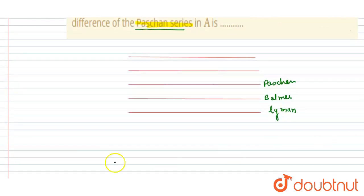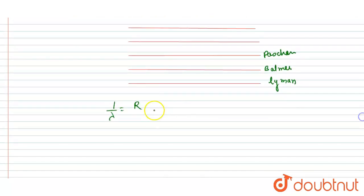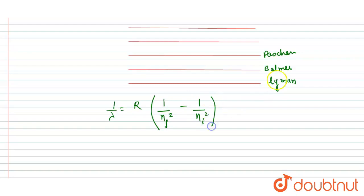If I write the formula for wavelength: 1/λ = R·Z²·(1/n_f² - 1/n_i²). Here Z = 1 for hydrogen. For Lyman, the final n equals 1, and for Paschen, the final n equals 3.